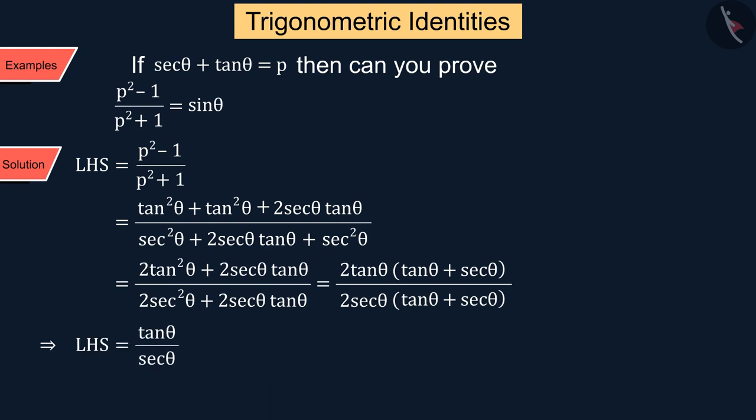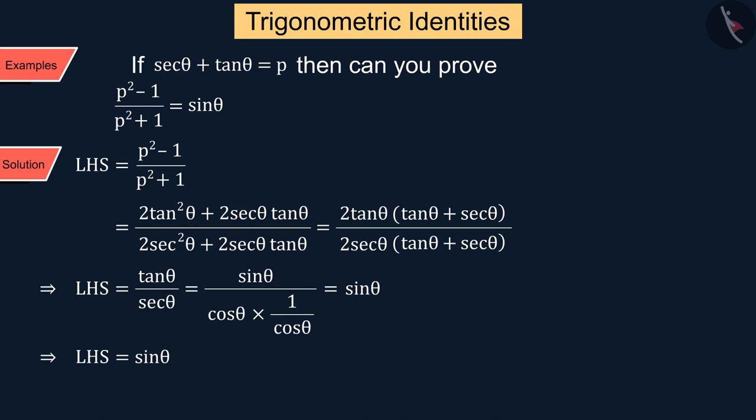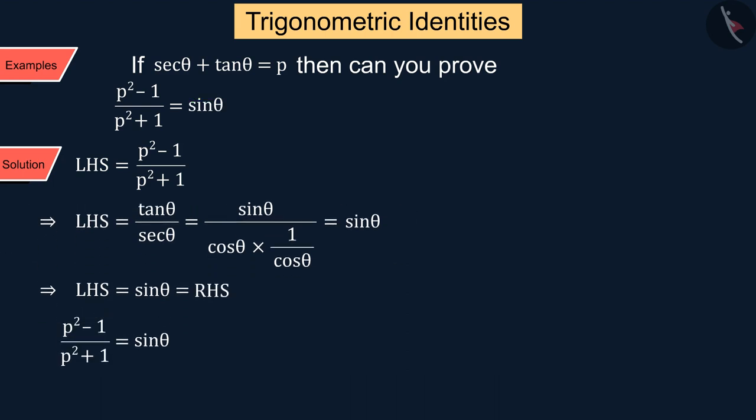But we know that we can write tan θ as sin θ upon cos θ, and sec θ as 1 upon cos θ, from which we get the left side value sin θ, which is equal to the right side of the given equation. Thus we proved it.